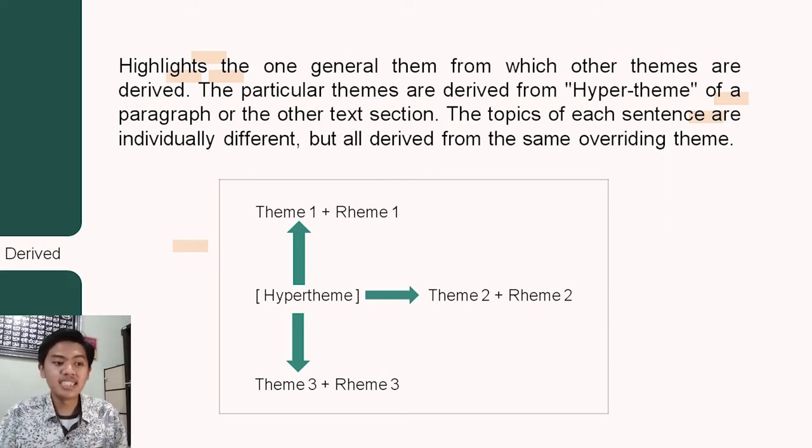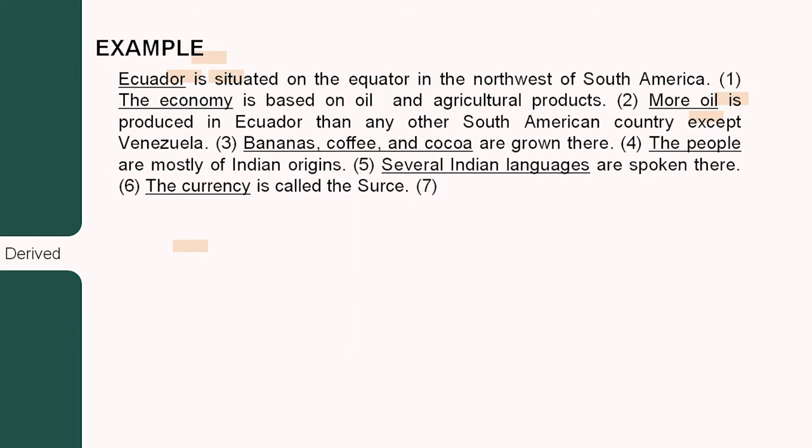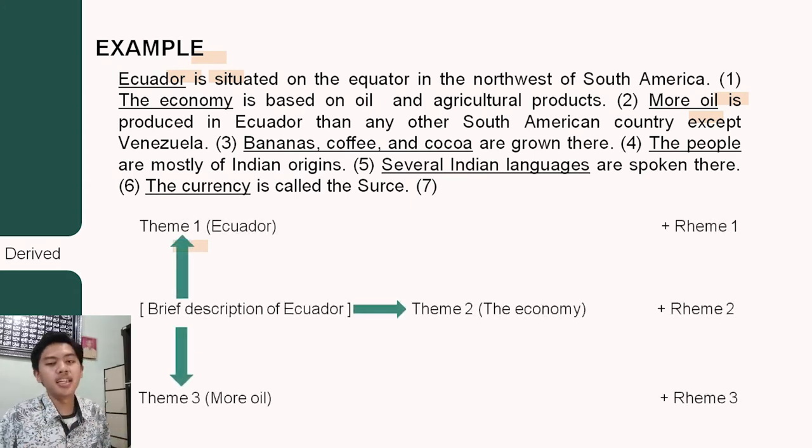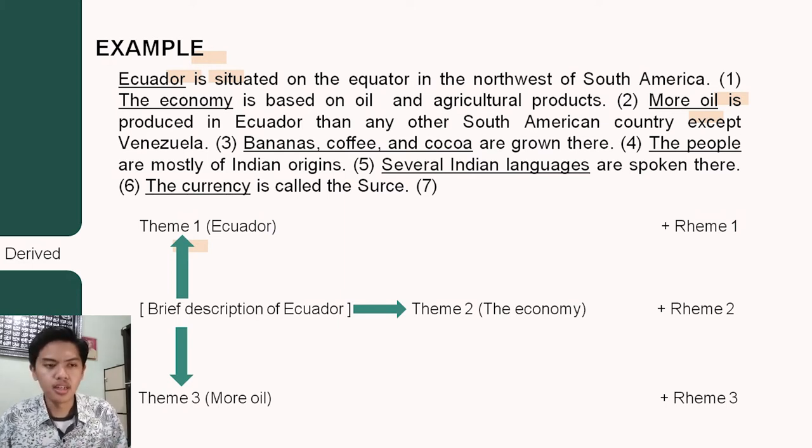So let's see the example. Okay, you can read the example. Okay, let's break it down. You can see the words with underline is a theme. And the words after the underline is a rheme. You can see my breakdown. Theme one, theme two, and theme three, and another theme is brief description of a quarter. So the rheme theme is the relation of each sentence. It must be related with another sentence. So that is the rheme. I think that is all from me. Thank you.